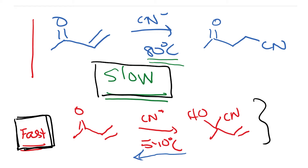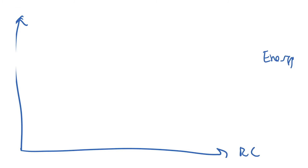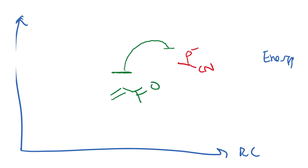Let me go through the energy profile so you will understand this process better. The y-axis is energy and the x-axis is reaction coordinate. Starting with this compound as the starting material, we are suggesting that the first step of this reaction must have some barrier, and you get the O–CN intermediate and then subsequently this gives you the product.